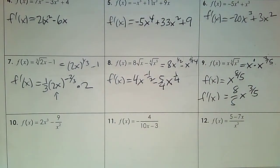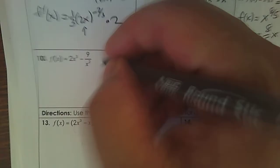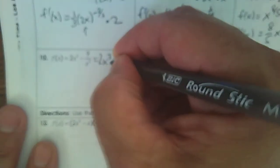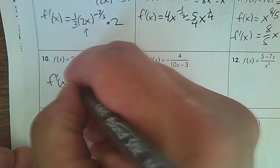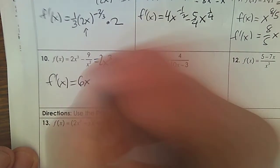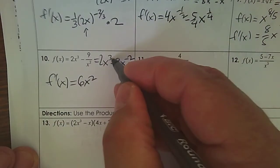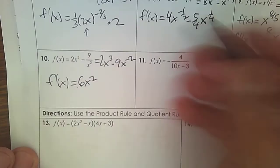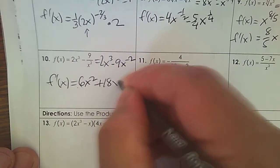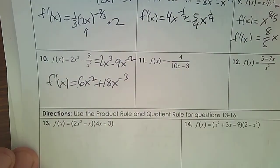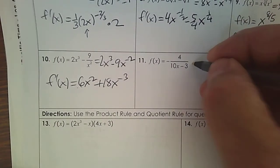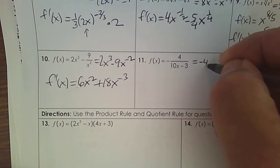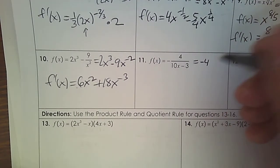Keep going. Number 10 — calculus friendly. So that's 2x cubed minus 9x to the negative 2 — write it as a power. The derivative using the power rule is 6x squared. So 3 times 2, subtract 1. Negative times the negative is plus 18x to the negative 3.